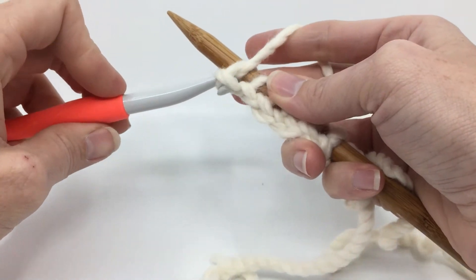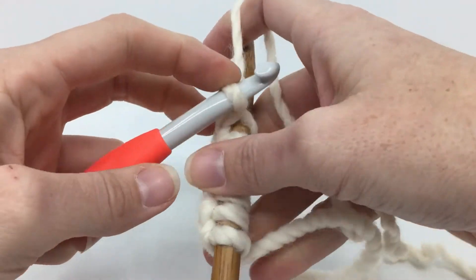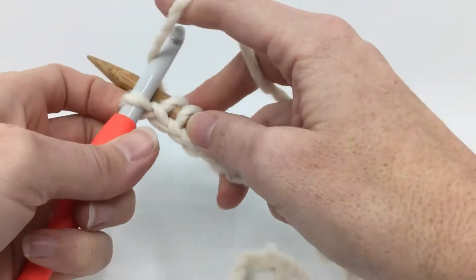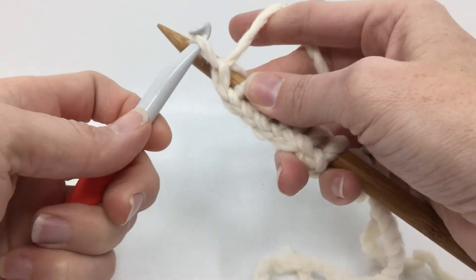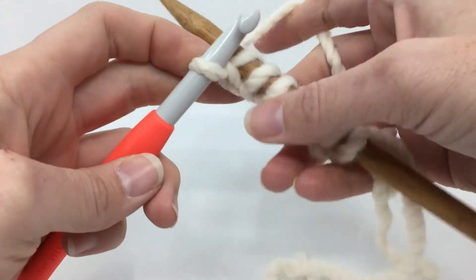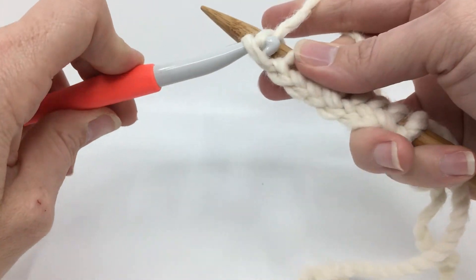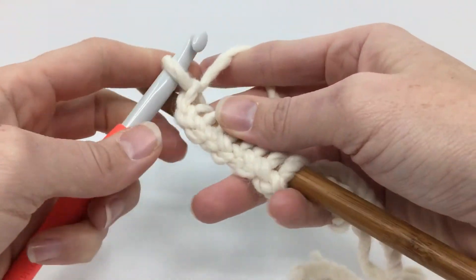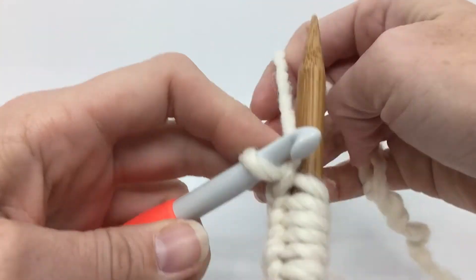Now, why would we use this crochet cast on? One really good reason is that you don't have to estimate how much yarn you need for the amount of stitches that you need. So instead of pulling out yards and yards of yarn, hoping you pulled out the right amount for your long tail cast on...